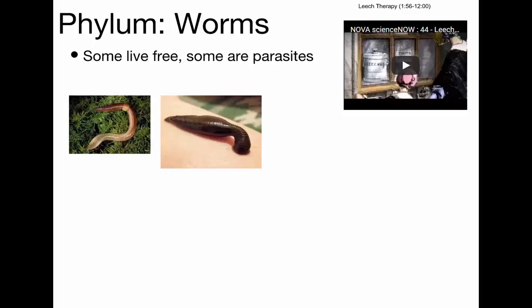Leeches are parasites found in fresh water — you can find them around here. They're fairly common but not really dangerous. They don't generally prey on humans; they typically prey on other animals.